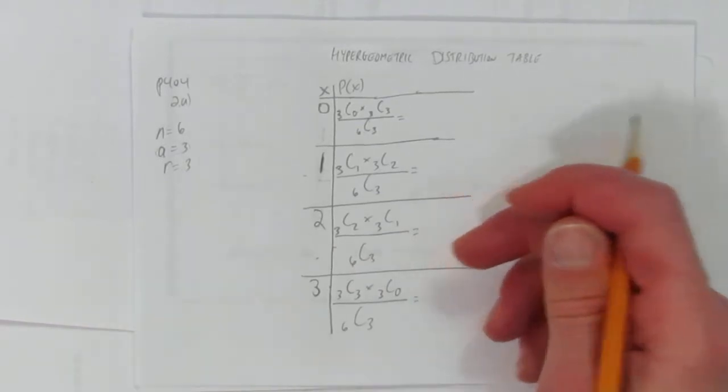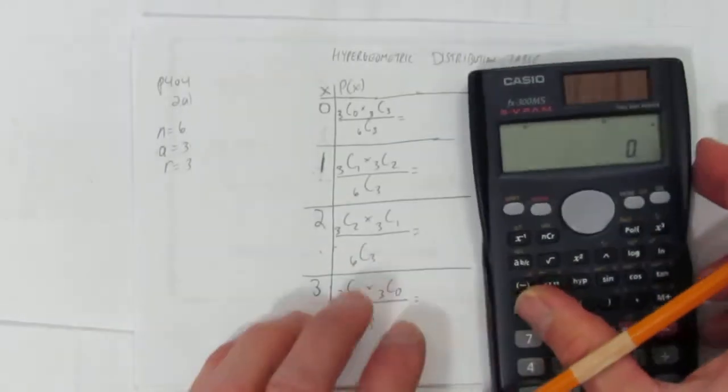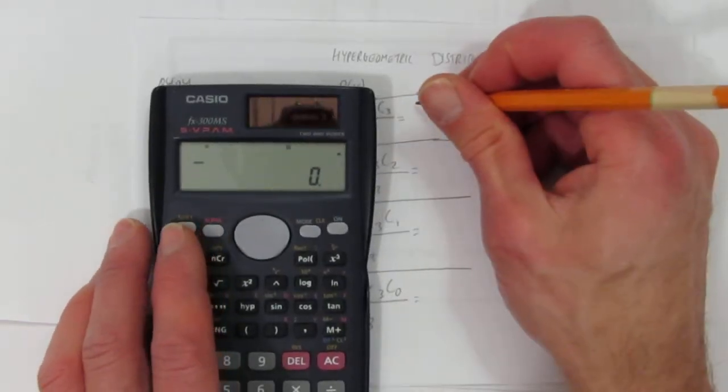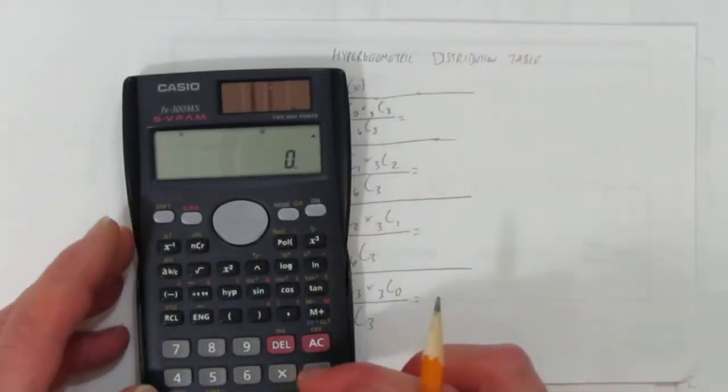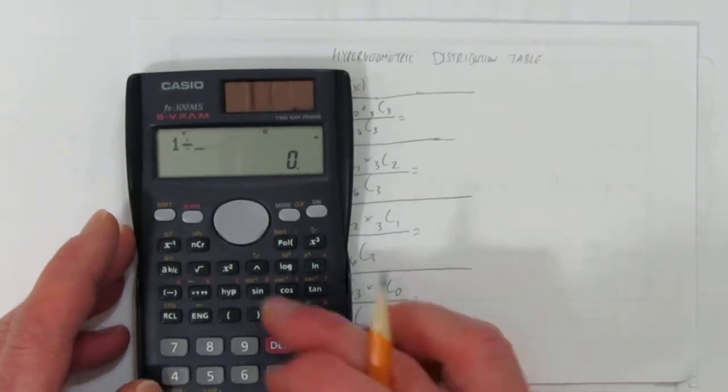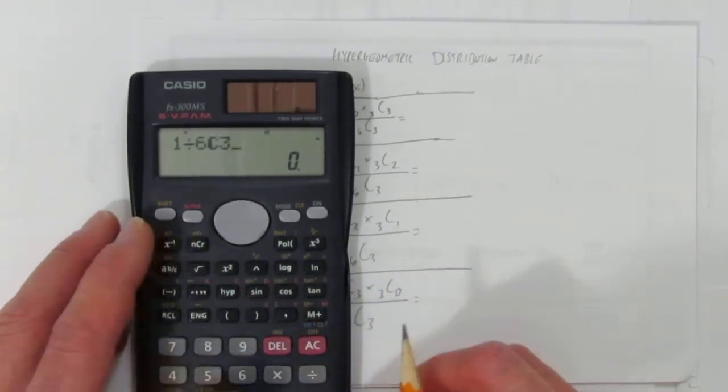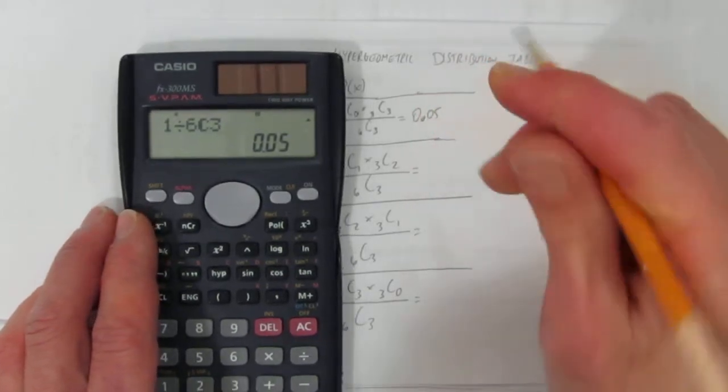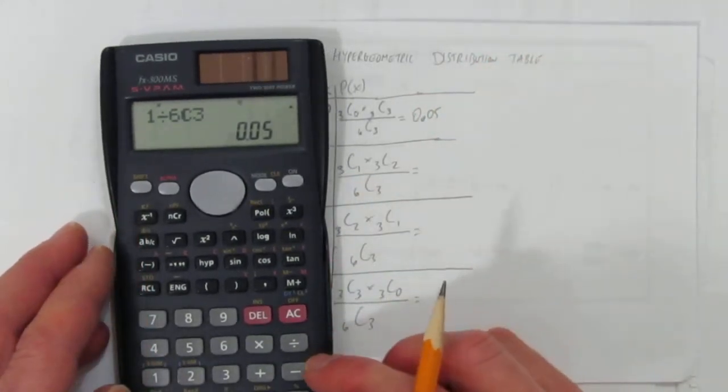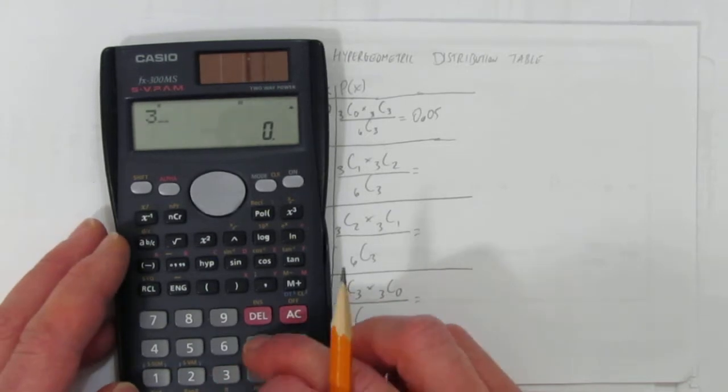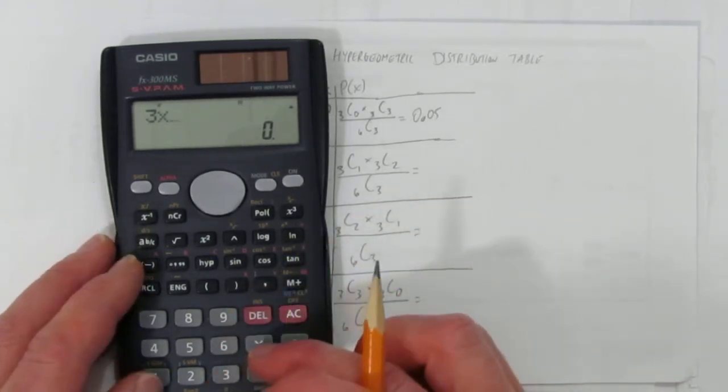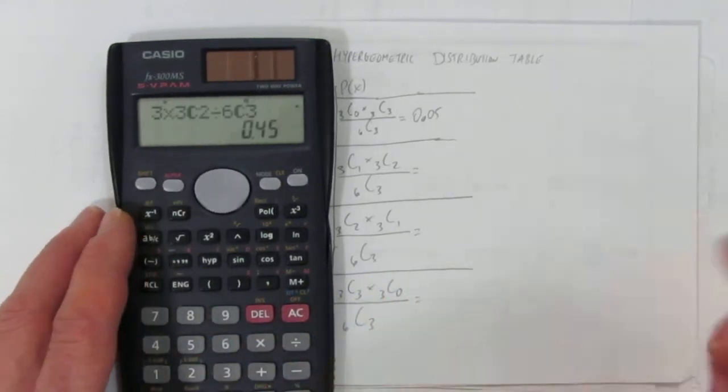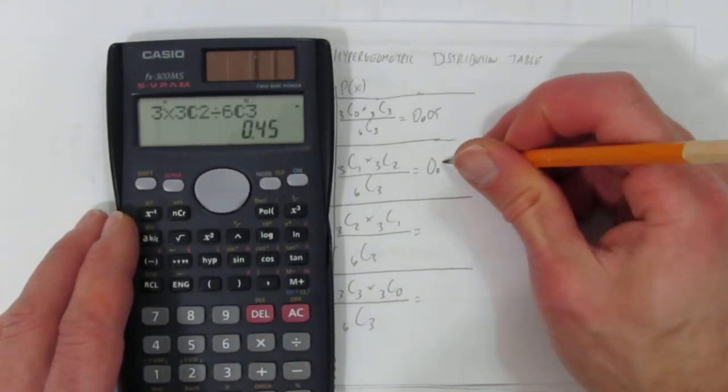And now we just calculate the probabilities. What's 3 choose 0? That's just 1. What's 3 choose 3? That's also 1. So here you just get 1 times 1 is 1 divided by 6 choose 3 and you get 0.05. What's 3 choose 1? That's just 3 times 3 choose 2 - that's also 3, but if you don't trust me you can type it in - divided by 6 choose 3 and you get 0.45.